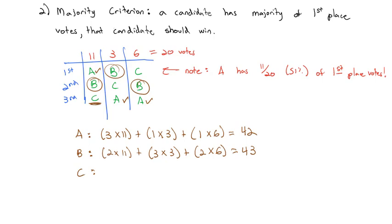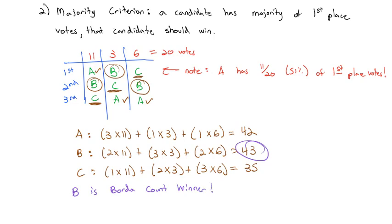And then C in third place for 1 point times the 11 votes, plus second place for 2 points times the 3 votes, plus first place for 3 points times the 6 votes, that's going to equal 35. And as we see, 43 is our majority, and then B is the Borda Count winner, even though A had a lot more first place votes, 11 versus 3.